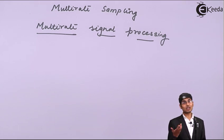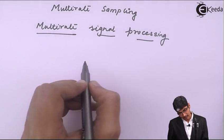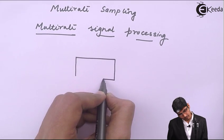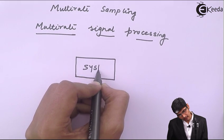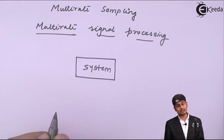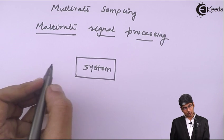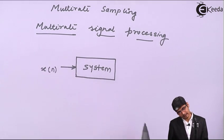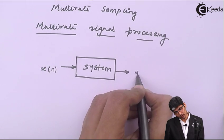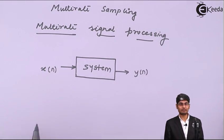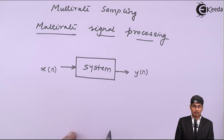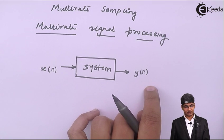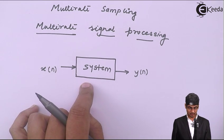Let us consider a system. To this system, up till now I gave an input which we normally call x(n) and we produced an output which we normally call y(n). We said that the input is discrete, the output is discrete, and hence the system is a discrete time system. We will give our attention only to discrete time systems.